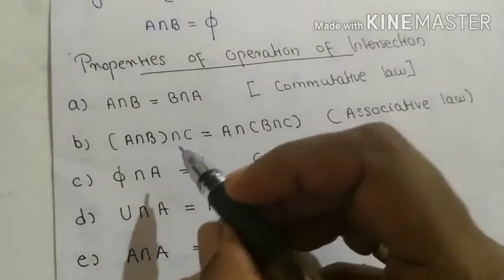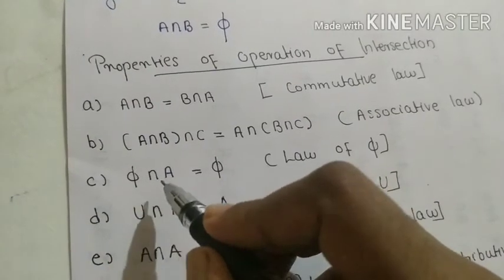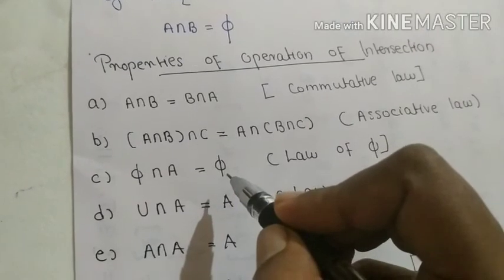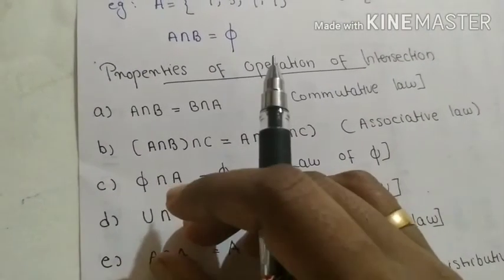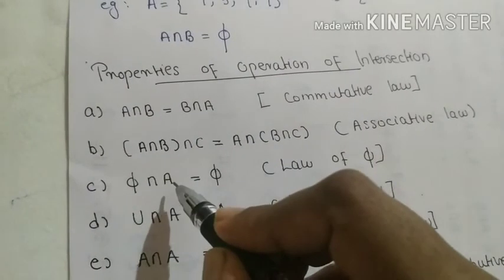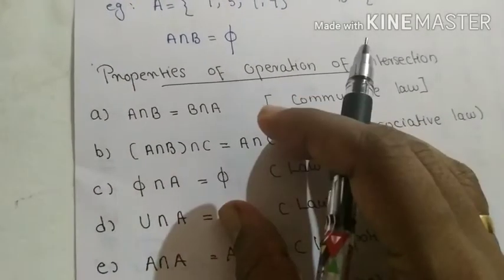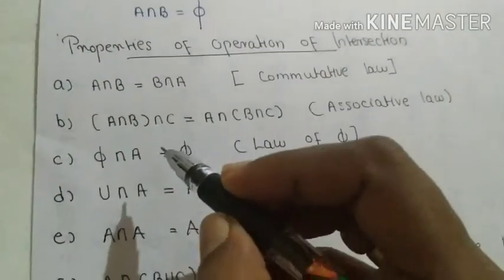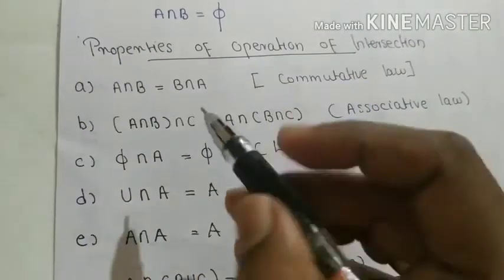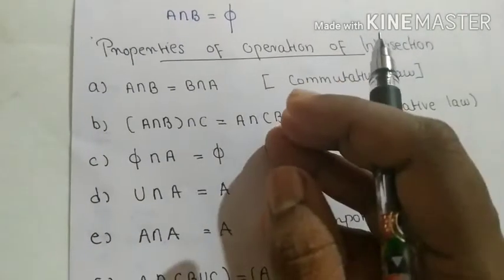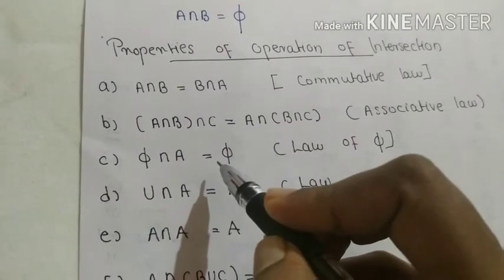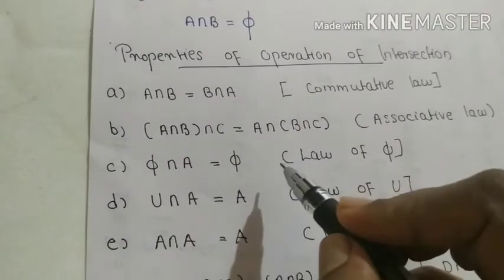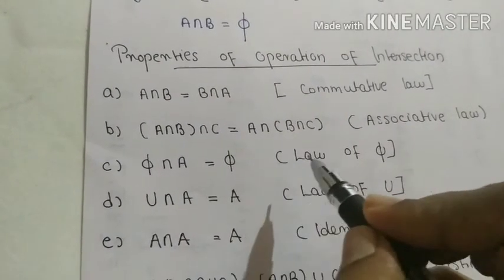The third property is that the null set intersection A is equal to the null set. Since the null set has no elements, comparing it with set A means no elements are common, so the result is the null set. This law is known as the law of null set.